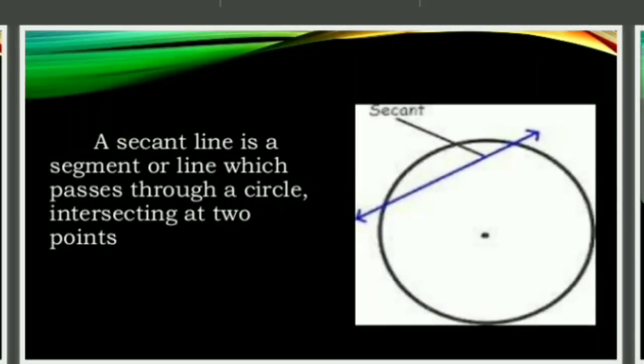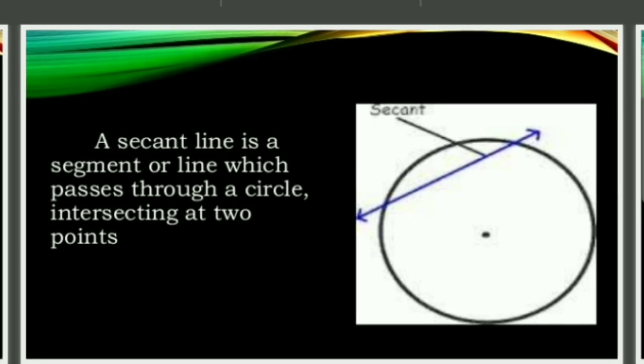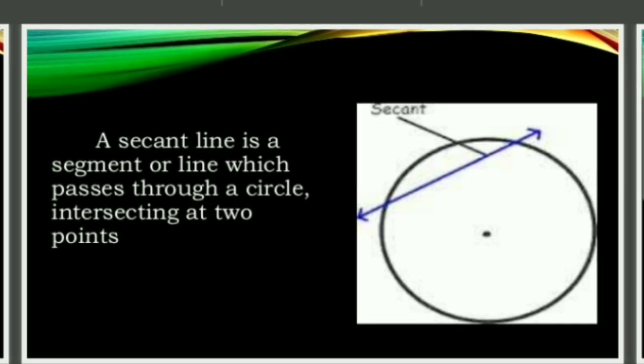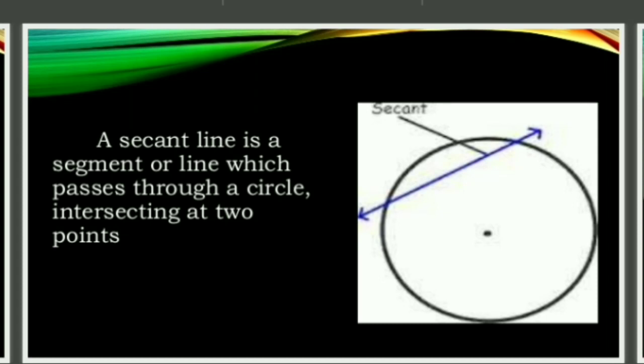Secant line: A secant line is a segment or line which passes through the circle, intersecting at two points.